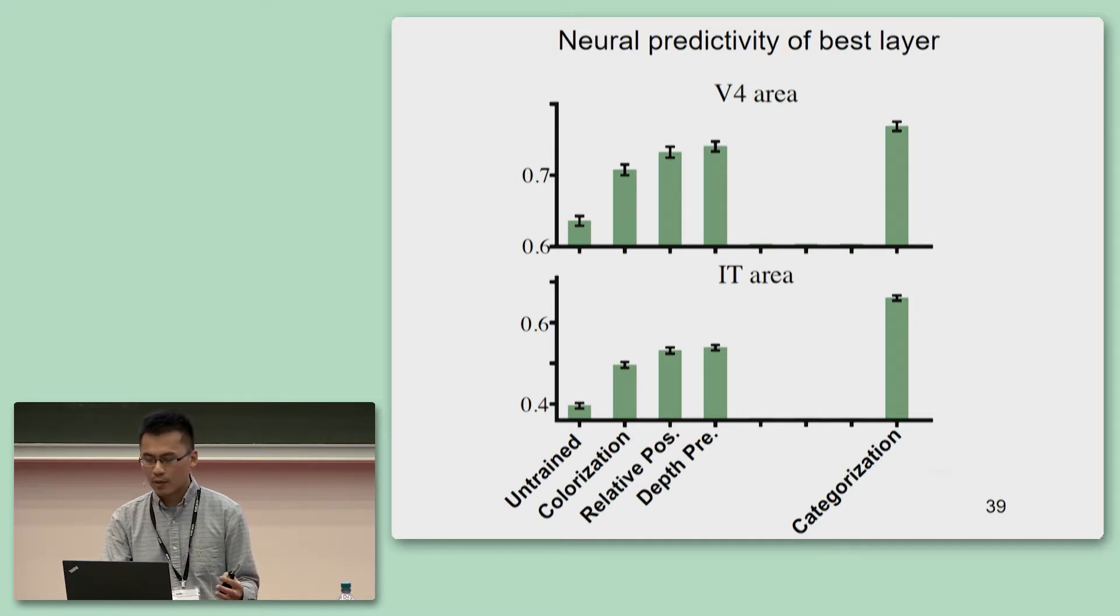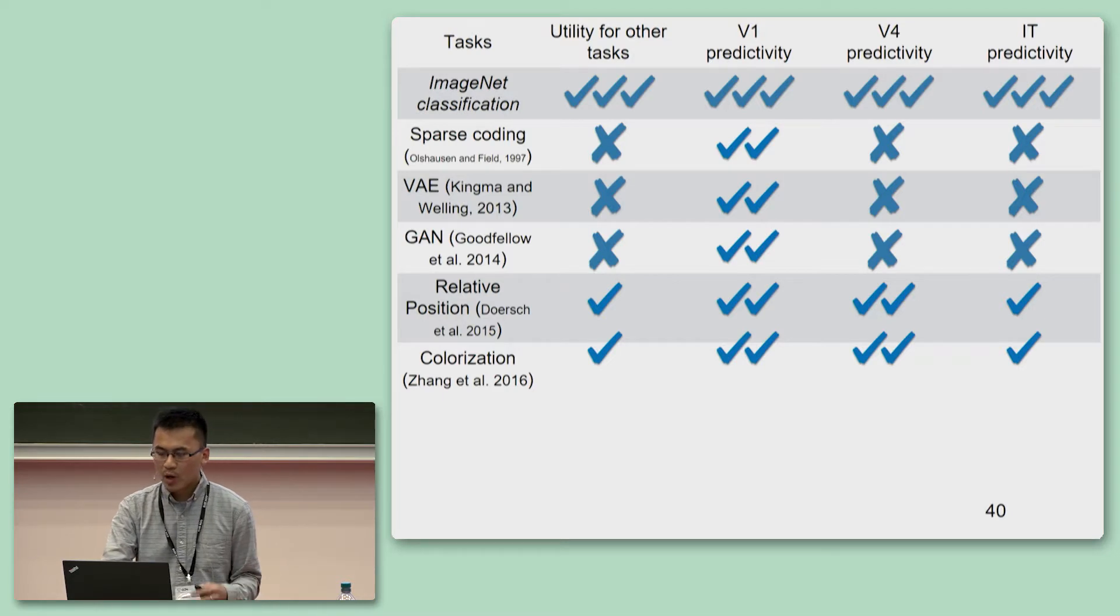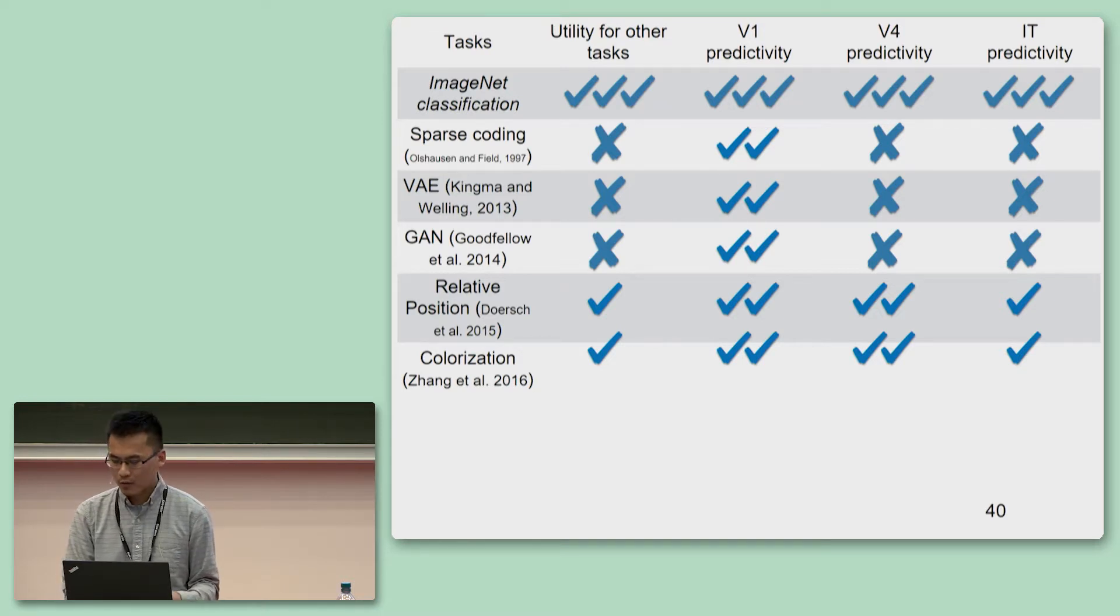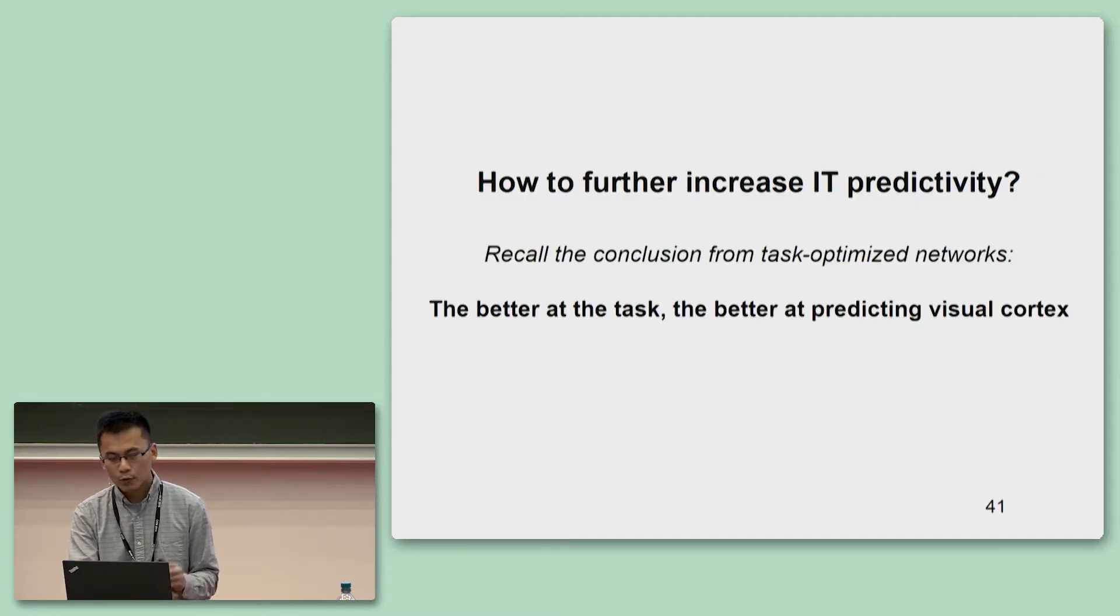We calculate the Pearson correlation of predicted and ground truth responses on held-out validation images and reports of the median of the correlations across neurons within one area for one layer. We then report the maximum neural prediction number across all layers. The results shown here indicate that these tasks all achieve significantly better neural predictivity than an untrained network. Although they are all worse than categorization tasks in both areas, the gap of V4 seems to be smaller than that of IT. Coming back to this table, these tasks seem to have okay performance on V4. They may have okay V1 predictivity as their early layer filters are also similar to Gabor filters. However, their IT predictivity and usefulness for other tasks are not so good.